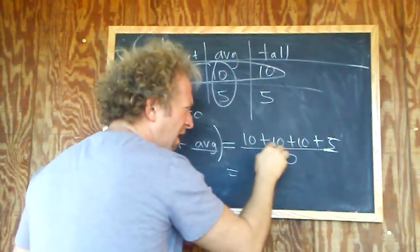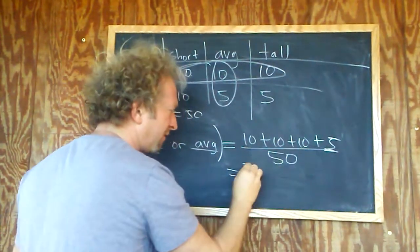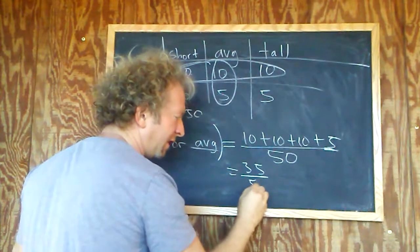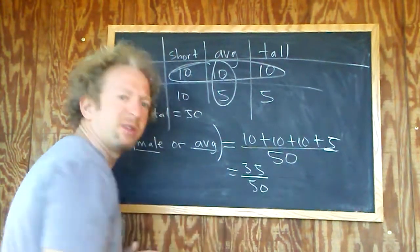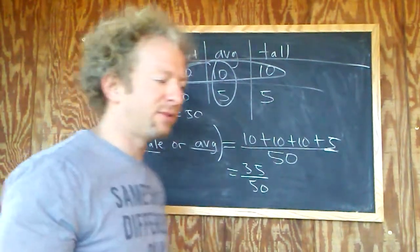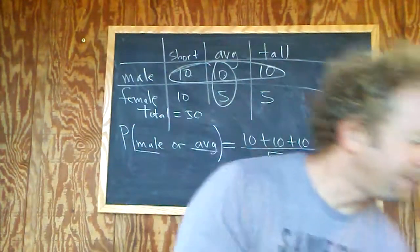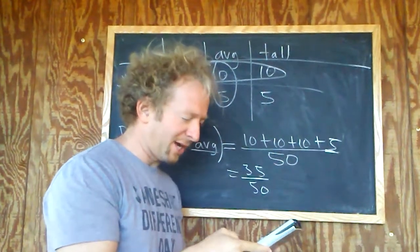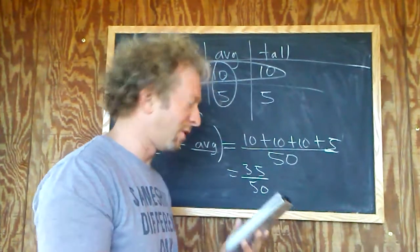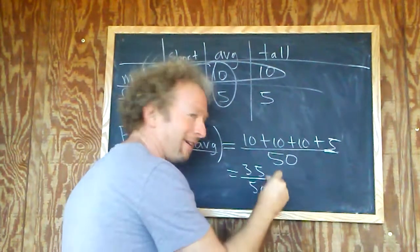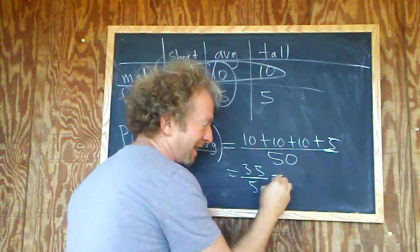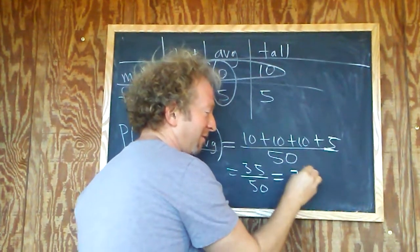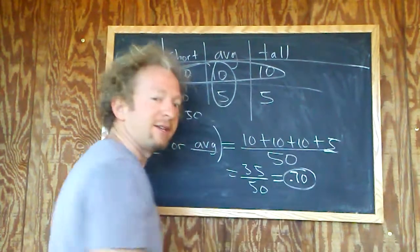So this is going to be 35 over 50. And in decimal form, 35 over 50 is 0.7. That's it.